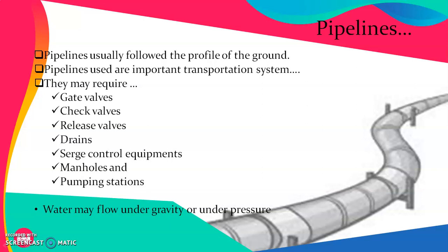Pipelines are invariably used for conveyance of water because of their closeness, which reduces the risk of pollution. The losses in conveyance are also very less in case of pipelines. Pipelines usually follow the profile of the ground and can have a profile that rises or falls. To make a complete pipeline system, we need different types of valves like gate valves, check valves, and release valves, different types of drains, surge control equipment, manholes, and pumping stations.